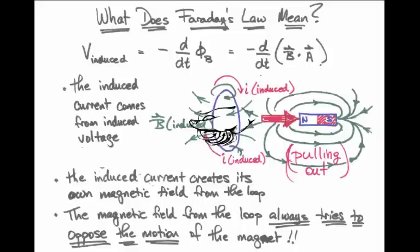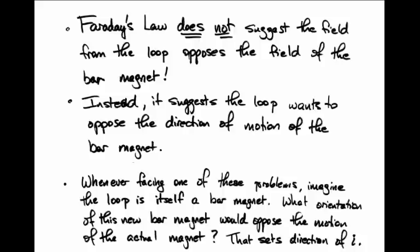You can always predict the direction the current will be flowing using the idea that the induced current always produces a magnetic field that tries to oppose the motion you have introduced into the system. Faraday's law does not suggest that the field of the loop always opposes the field of the bar magnet — it opposes the direction of motion of the bar magnet. Whenever you're solving one of these problems, imagine the loop of wire itself is a bar magnet: what orientation of this new bar magnet would oppose the motion of the actual magnet?